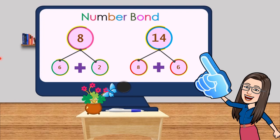Another example: 8. We can break down 8 to 6 and 2, so we can combine 6 and 2 to make 8. Fourteen - the numbers that bond to 14 are 8 and 6, so we can combine 8 and 6 to make 14.